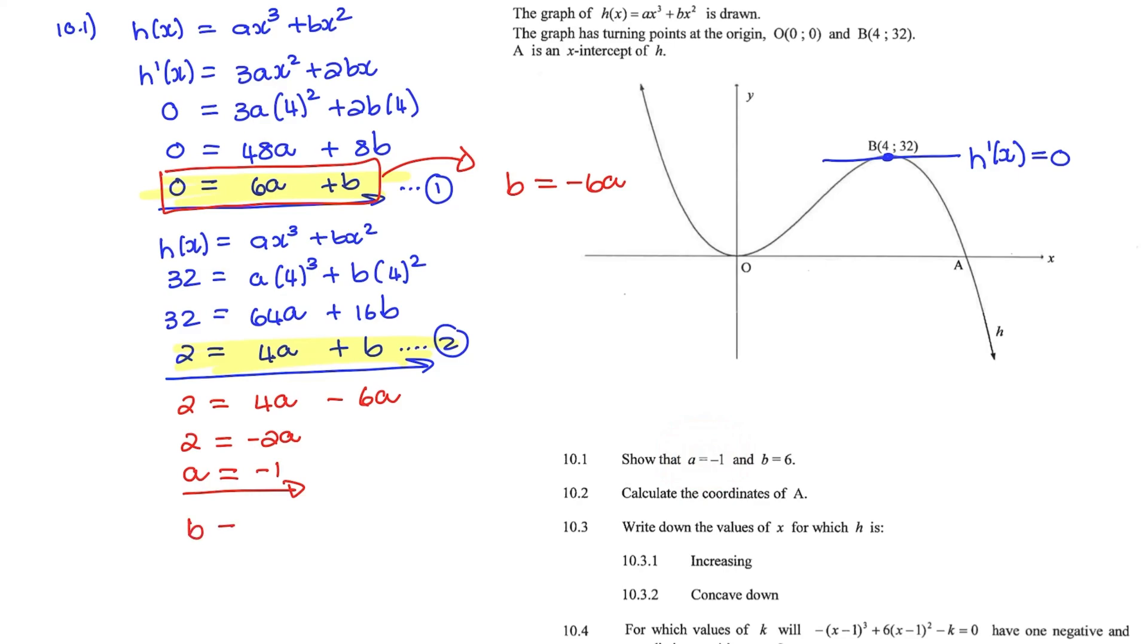Now for the B value, I know B equals negative 6A, and I replace A with negative 1. So therefore B is equal to 6, which is also the value which I wanted to find.